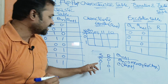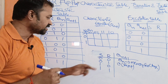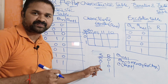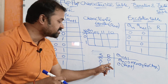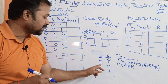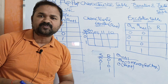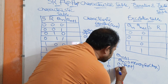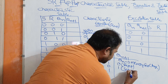Next, if the inputs are 10, here S value is 1. Previously R value was 1 so output was 0. Now S value is 1, so output is set — set means 1.